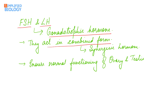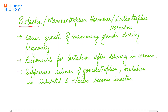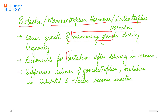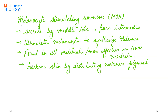FSH and LH together are referred to as gonadotropic hormones and act in a synergistic combined form, ensuring normal functioning of the ovary and testes. Prolactin, also known as mammotropin or luteotropic hormone, causes growth of mammary glands during pregnancy and is responsible for lactation after delivery. In women, it suppresses the release of gonadotropins, thereby inhibiting ovulation and making the ovaries inactive.